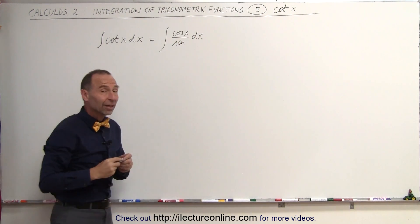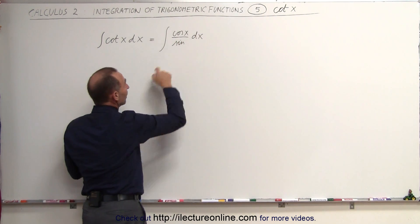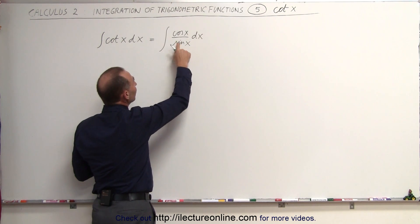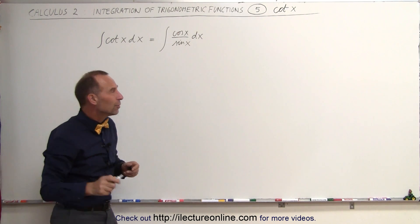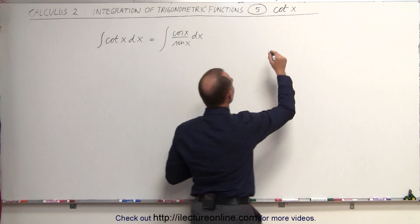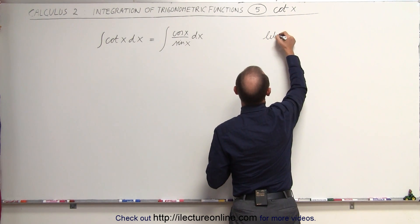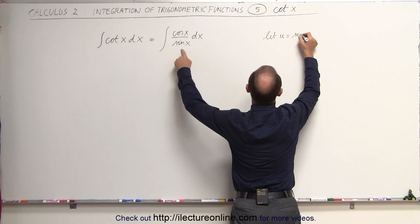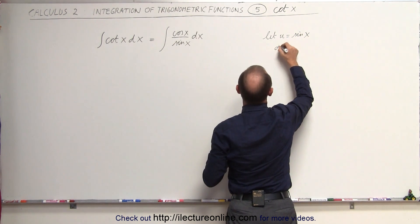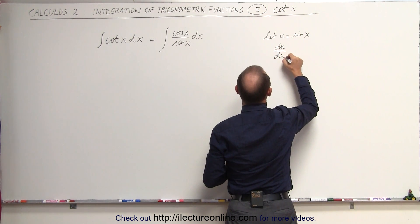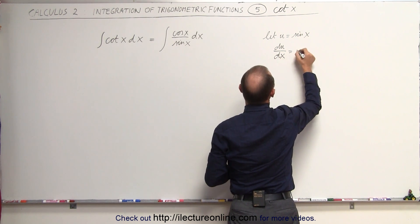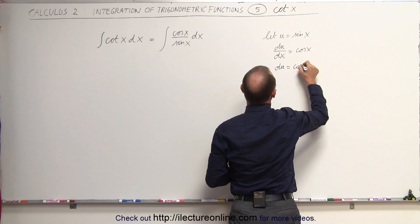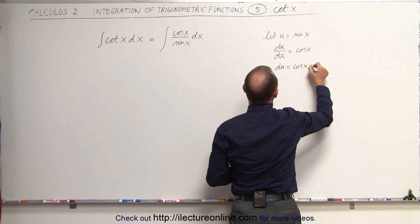We have to realize that the differential of the sine of x is the cosine of x. So if we use the following substitution — let u equal the denominator, the sine of x — then we can say that du/dx is equal to the cosine of x, or du is equal to the cosine of x dx.